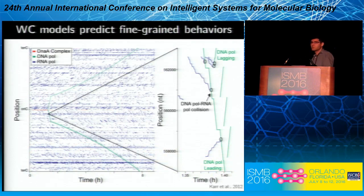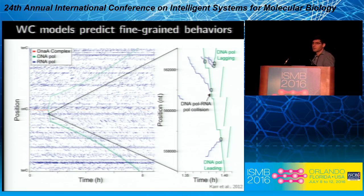One thing you can use wholesale models to do is predict a wide range of fine-grained behaviors. This slide illustrates the predicted binding locations of DNA in red, DNA polymerase in green, and RNA polymerase in blue throughout the predicted life cycle of one in silico cell. With wholesale models, we can even zoom in on just a small piece of this space-time graph to predict really fine-grained behaviors, like interactions or collisions among pairs of DNA binding proteins.